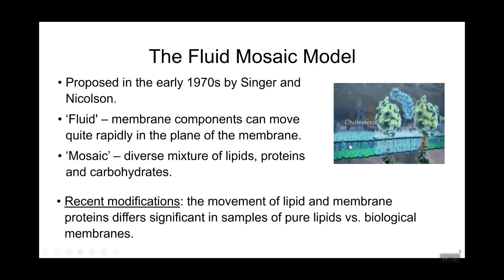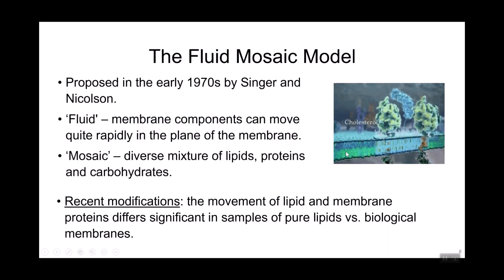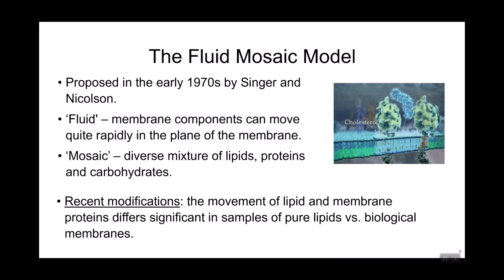The fluid mosaic model was proposed in 1972 by Singer and Nicholson. It describes the membrane as a mixture or mosaic of lipids, proteins, and carbohydrates, and states that they can move about within the membrane — that's the fluid part. Singer and Nicholson said things can move freely in a membrane, but what we now know based on several experiments is that this idea is a little too simplistic. Real membranes are much more complex, and while it's still a widely adopted model, the fluidity just isn't as free as originally thought.